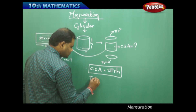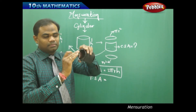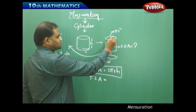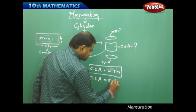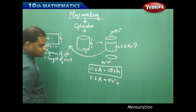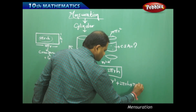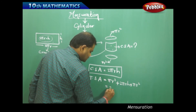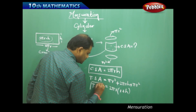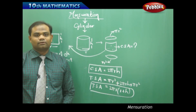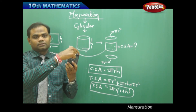Next, let's find the total surface area of a cylinder. The total surface is the curved surface plus the top and bottom surfaces. So TSA equals the curved surface area 2πRh plus the area of the top circle πR² plus the area of the bottom circle πR², giving TSA = 2πR(R + h).